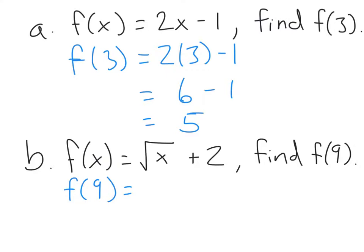The easiest thing you can do with functions is evaluate them. In Part A, we have f of x equals 2x minus 1 — this is the recipe for your function, meaning whatever x is, multiply it by 2 and subtract 1. To find f of 3, we replace every x with 3: f of 3 equals 2 times 3 minus 1. So 2 times 3 is 6, and 6 minus 1 is 5. Therefore f of 3 equals 5.